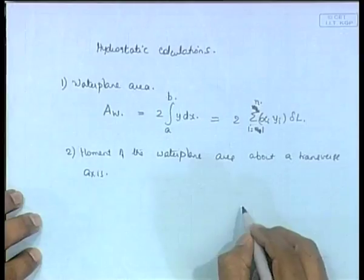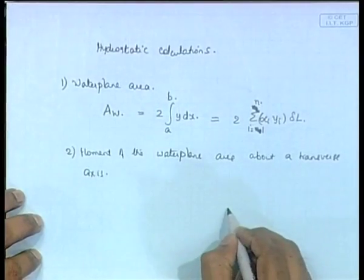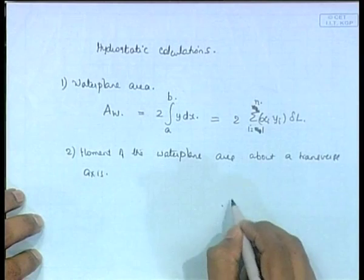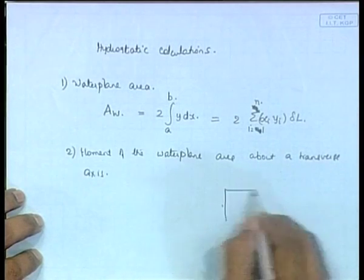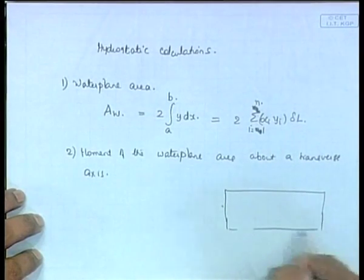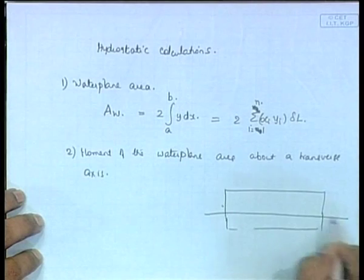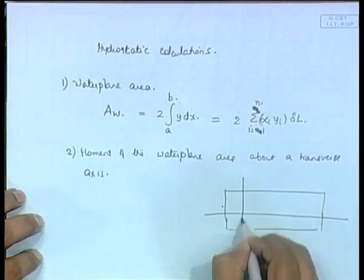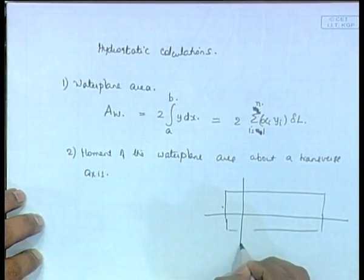At the time of the exam at least you should be clear. If you have the ship like this, and this is the length of the ship, this axis is always the longitudinal axis and the perpendicular one is the transverse axis.